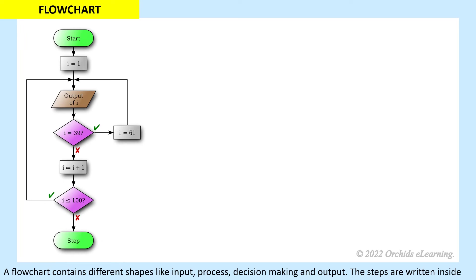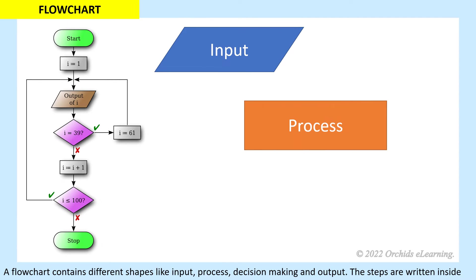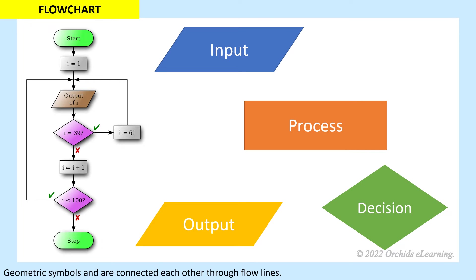A flow chart contains different shapes for steps like input, process, decision making, and output. The steps are written inside geometric symbols and are connected to each other through flow lines.